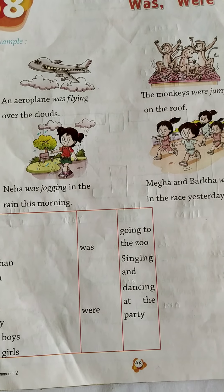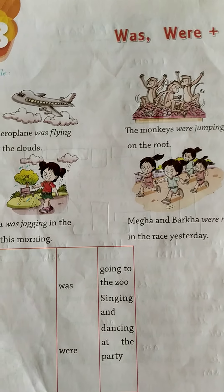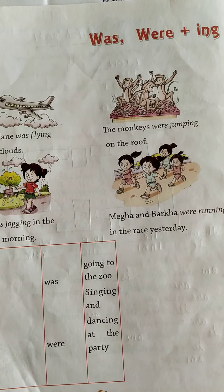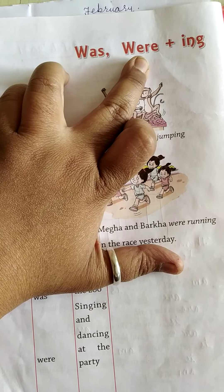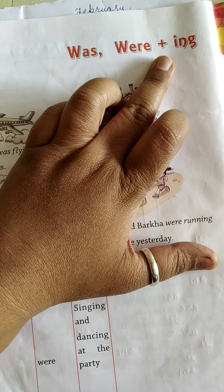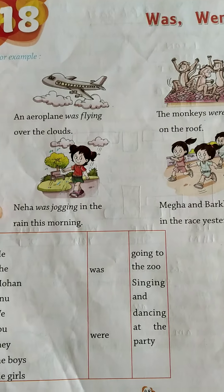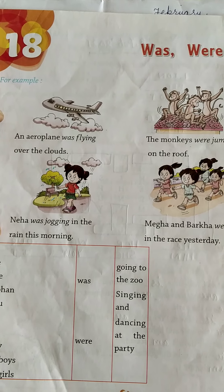Good morning children. Today we are going to do the new exercise: was and were using plus -ing. Lesson number 18 of your coursebook.